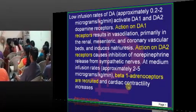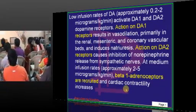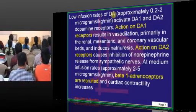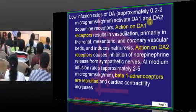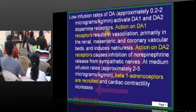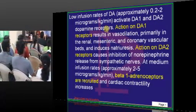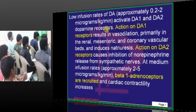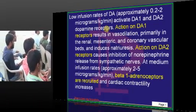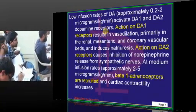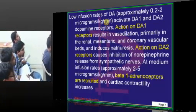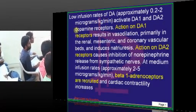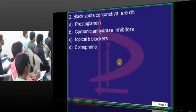At medium infusion rates, beta-1 receptors are stimulated. At the low infusion rate, defined as 0.2 to 2 micrograms per kg per minute, D-receptors are stimulated. As a house surgeon, you should be hands-on with how to put a dopamine drip, mannitol drip, noradrenaline drip, nitroprusside drip, and 5-6 infusions by the end of housemanship.